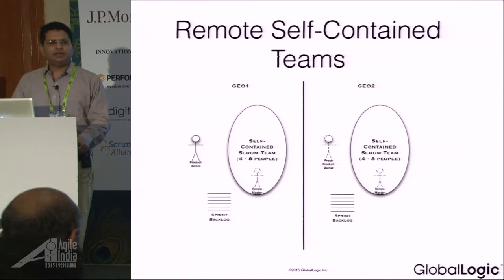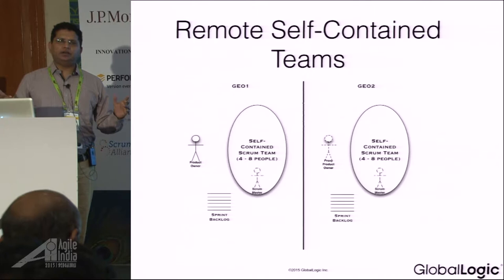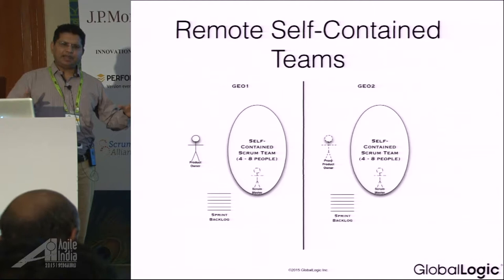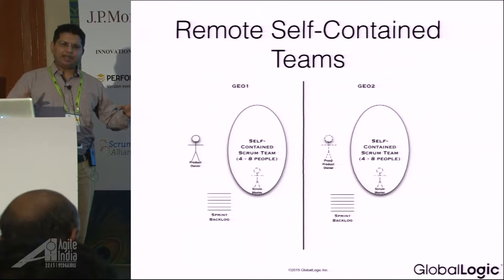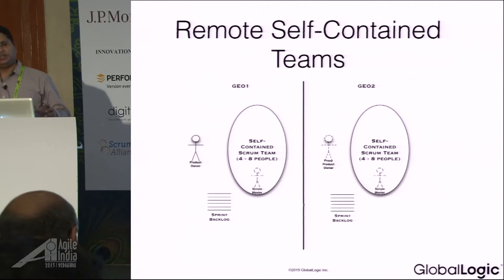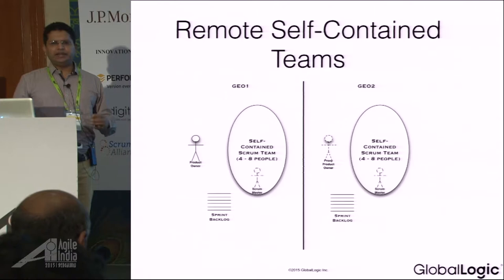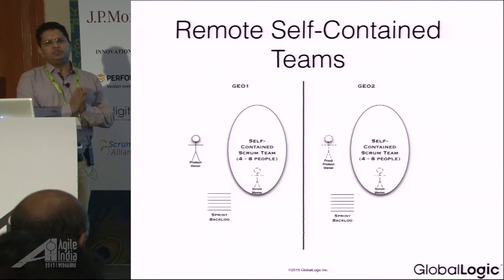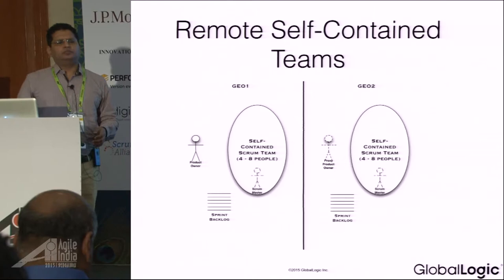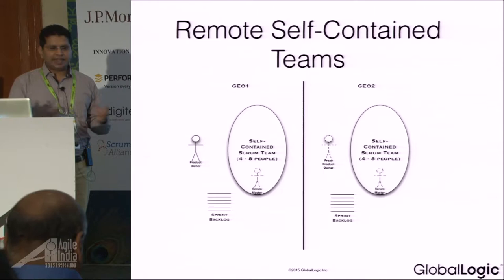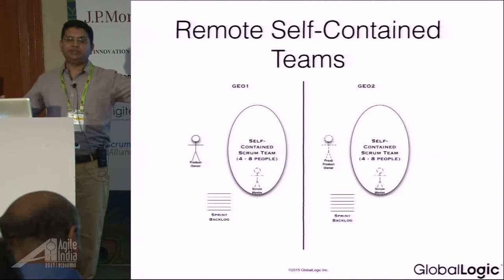The whole governance model is there because of that. That's where you need courage to take certain steps. For example, I was working in a team where one team was creating the backbone of the entire architecture and another was working on the front end. We made a decision: we're already done with this backbone work, so let's divide the team — move three people to the front-end team and start working. You have to take decisions based on what is happening right now, instead of saying this team will continue to be there forever.